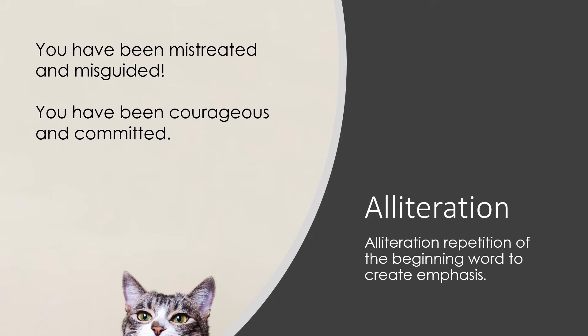Next one is alliteration — this is just a repetition of the first letter of a word. Examples: 'You have been mistreated and misguided,' or 'You've been courageous and committed.' It creates an emphasis on those two words. A lot of people find this to be a slightly cheap persuasive technique, but personally I think it's absolutely fine — if you just want to put a certain emphasis on a word, almost like someone is slamming their fist down, it can work really well. It is one of the harder techniques to analyze because its effect is essentially just emphasis, which is that stress upon the words.